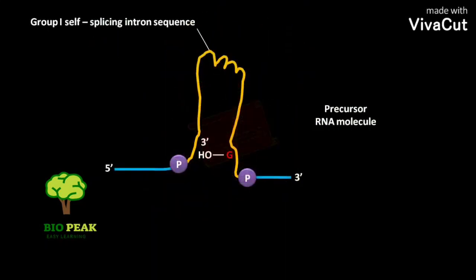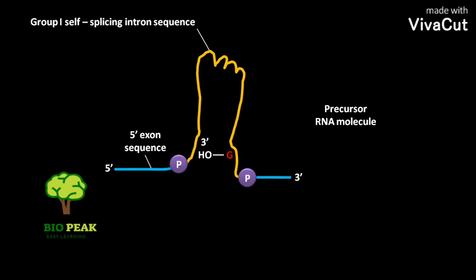The group 1 self-splicing intron sequence, along with a 5' exon sequence and a 3' exon sequence, is present in a primary transcript or a precursor RNA molecule. Within the intron sequence,